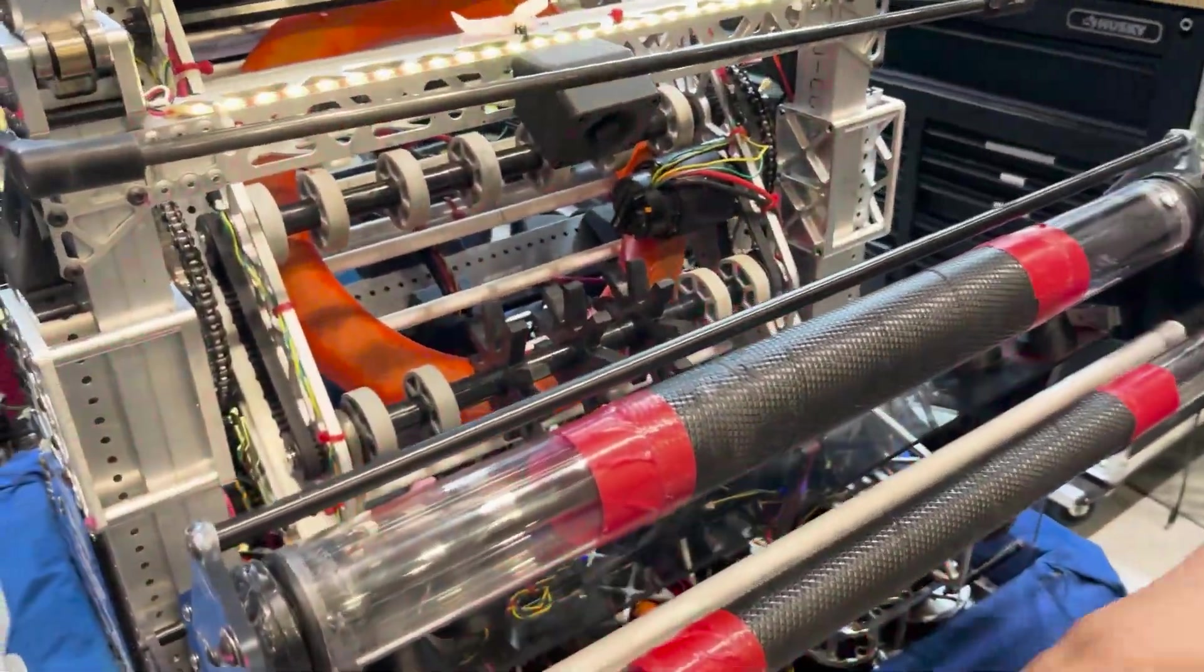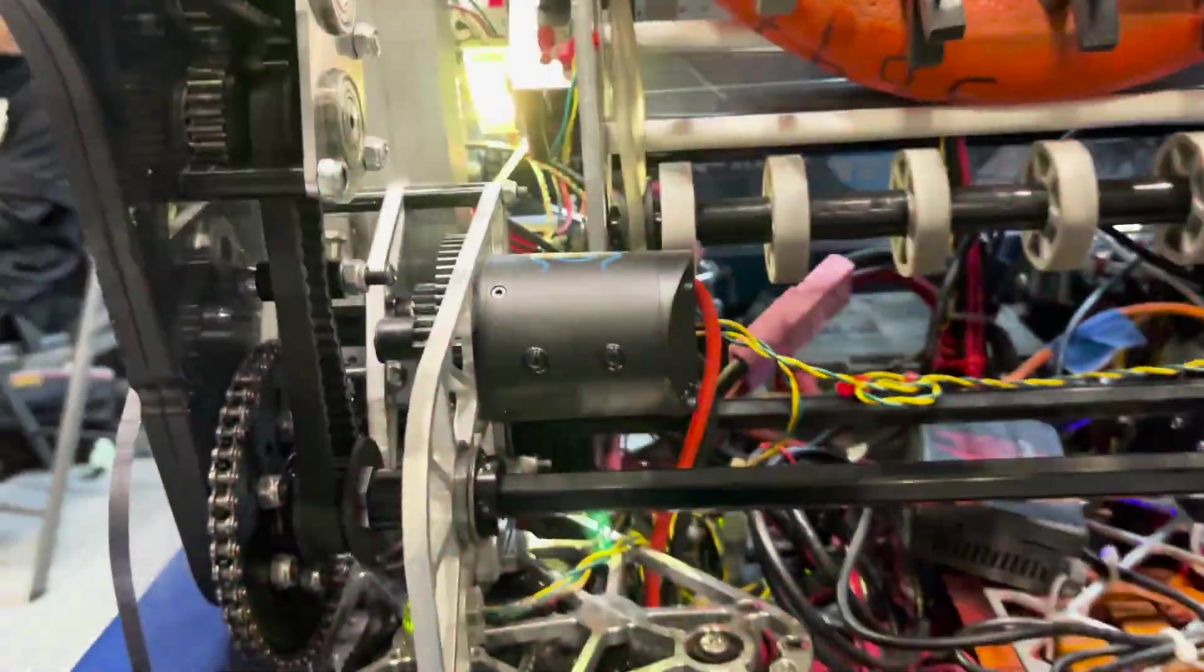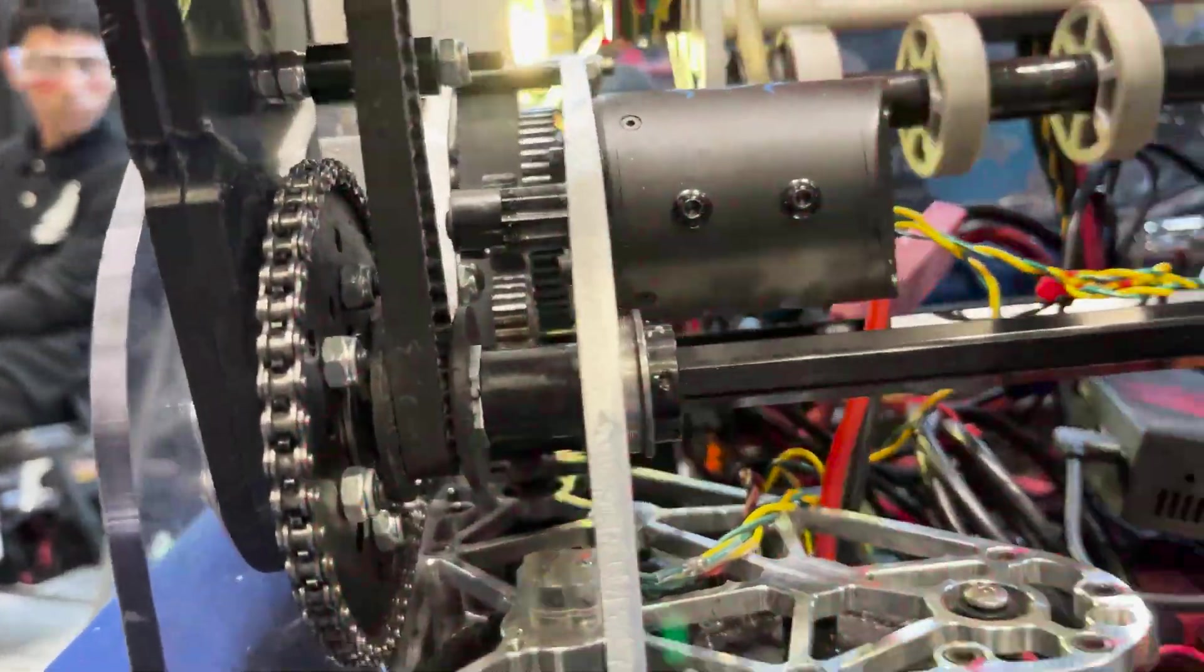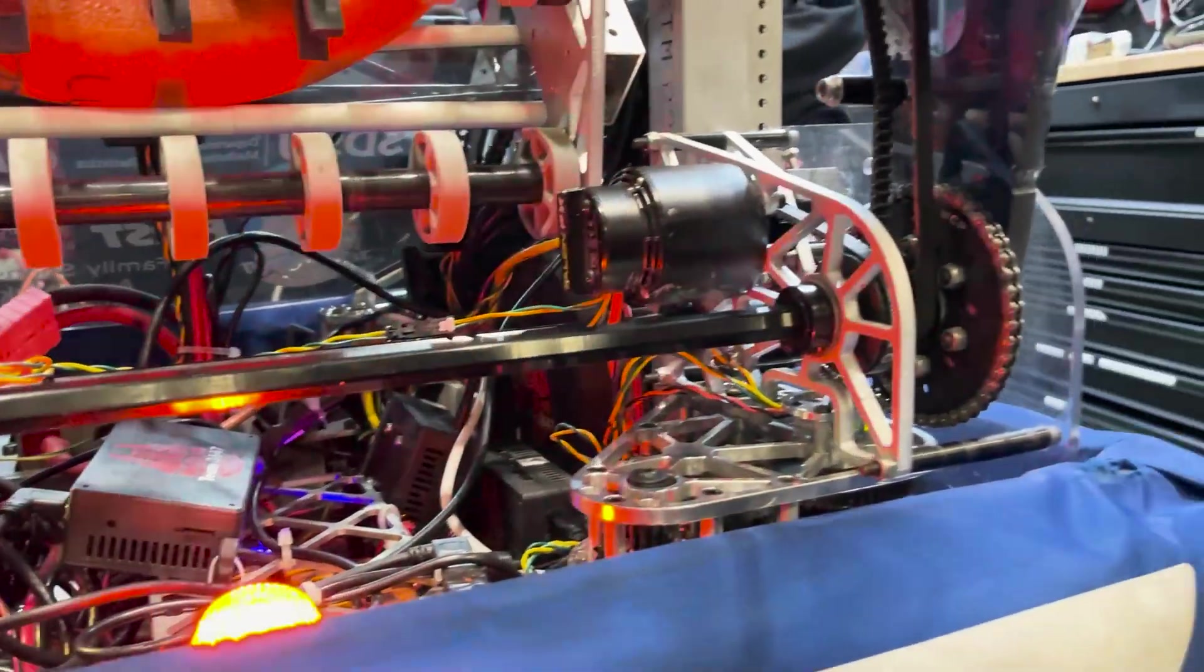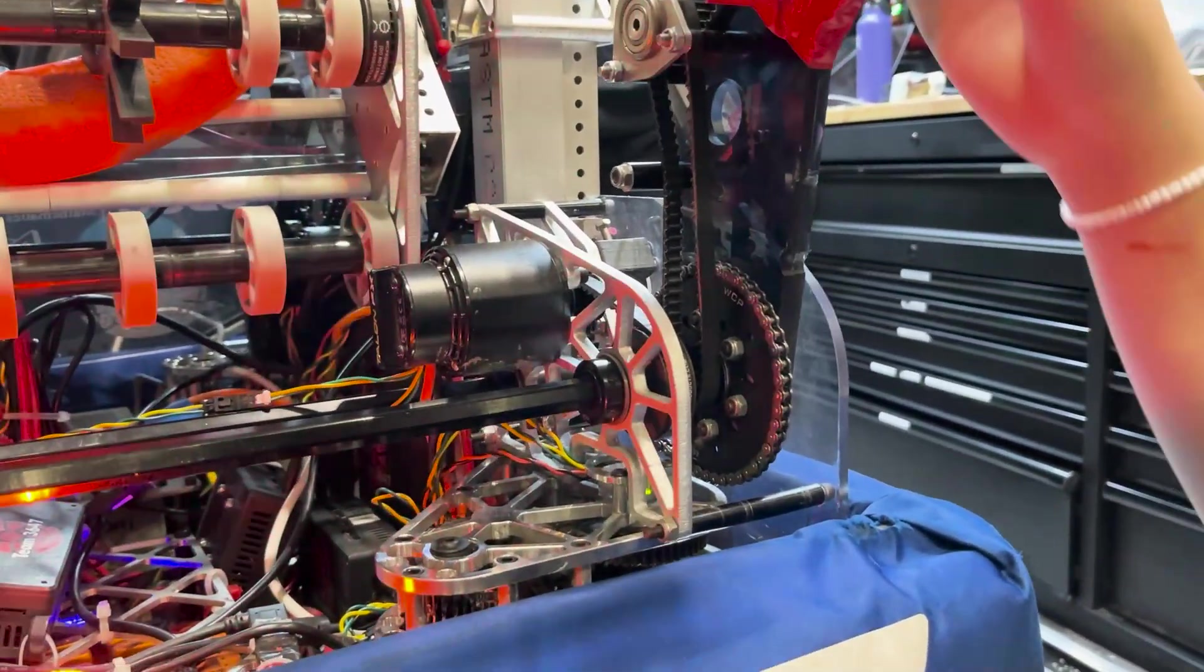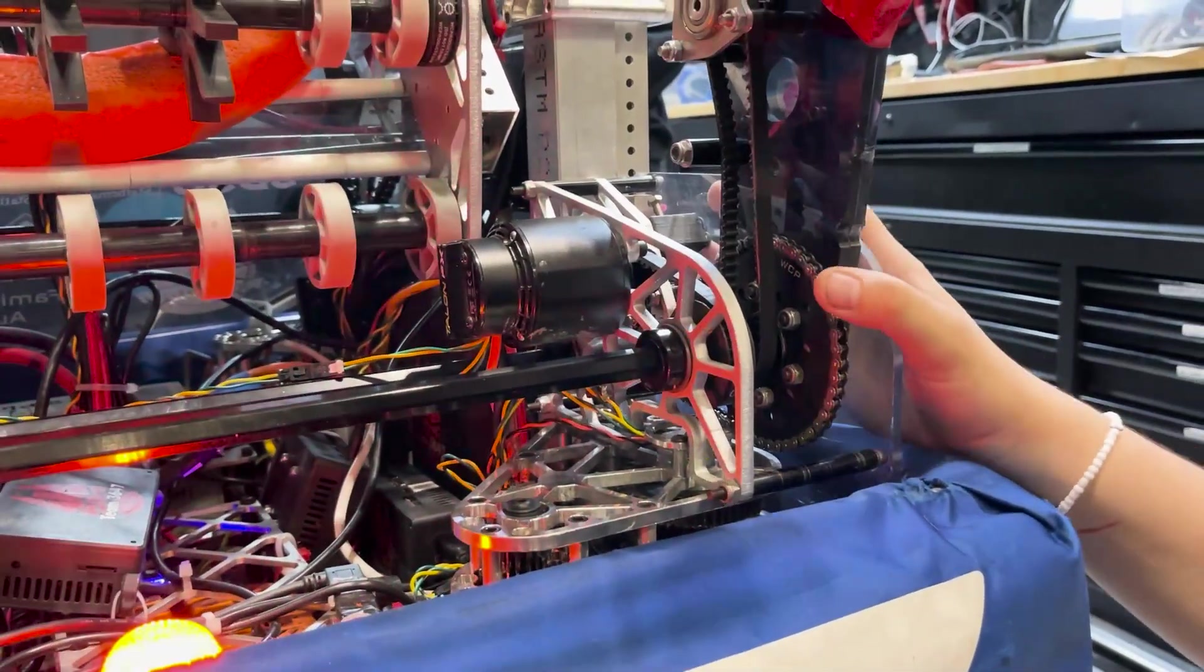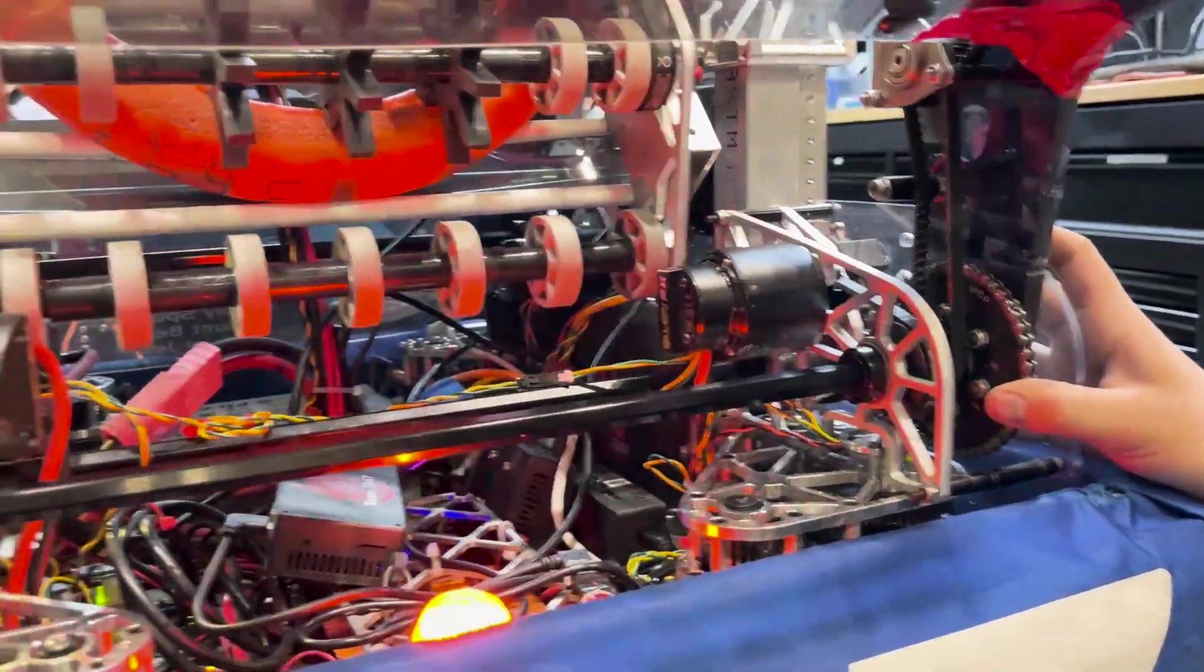After that we have these two very compact gearboxes that both act as gearboxes and rollers. So these rollers are powered by the gearbox and the pivot is also powered by the same design. It's very compact and it's just right on top of the spurs.